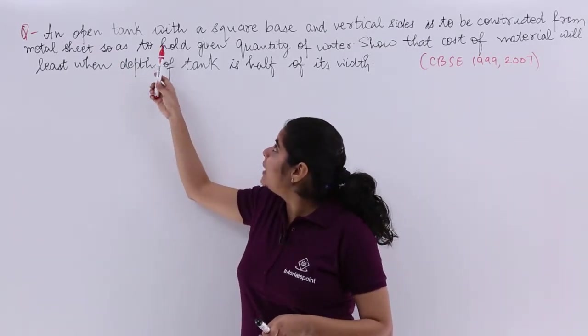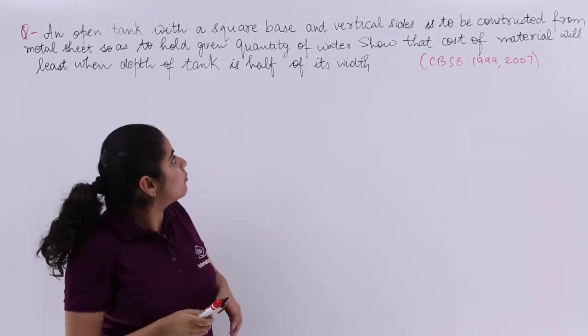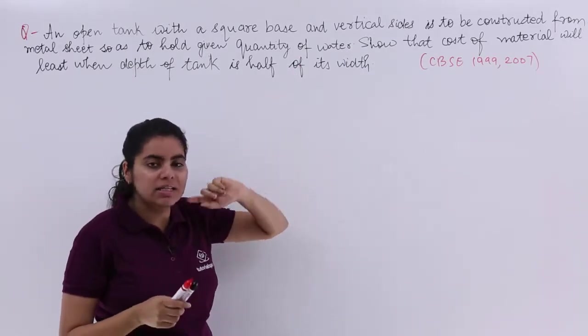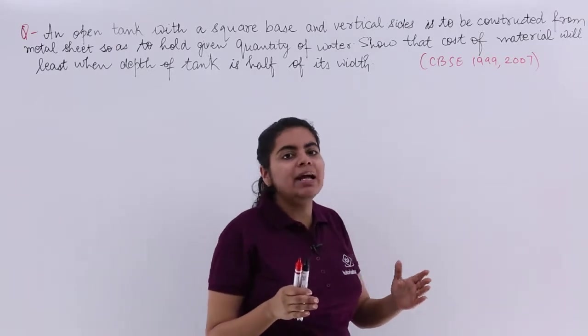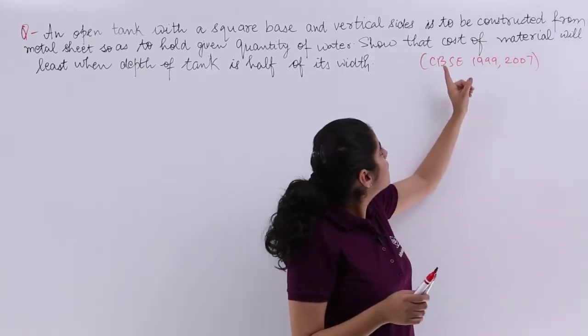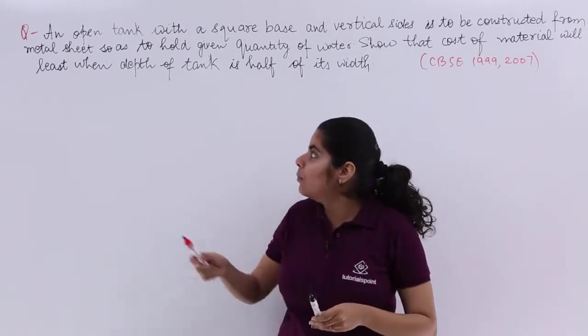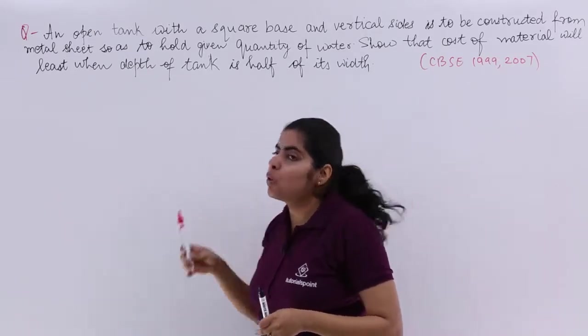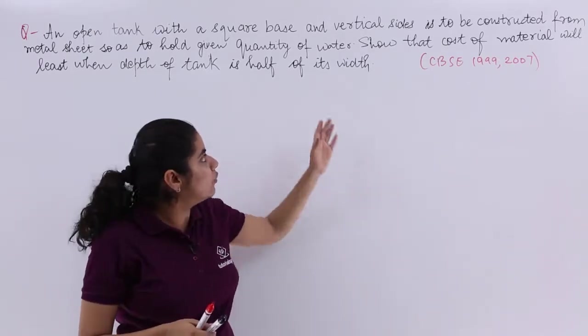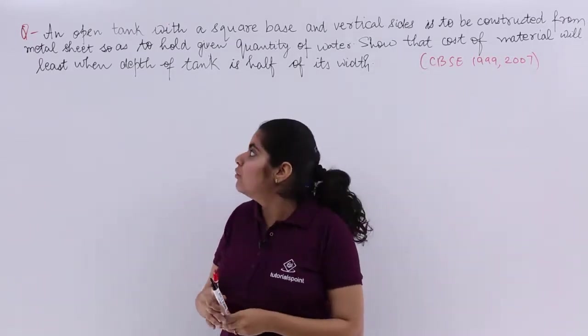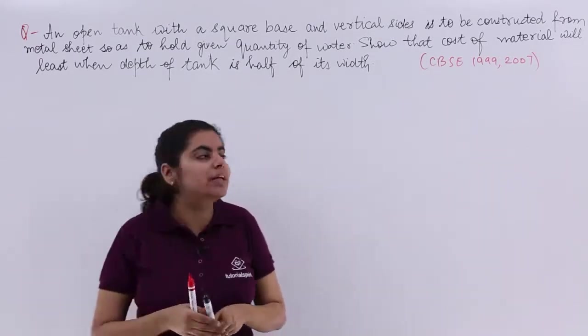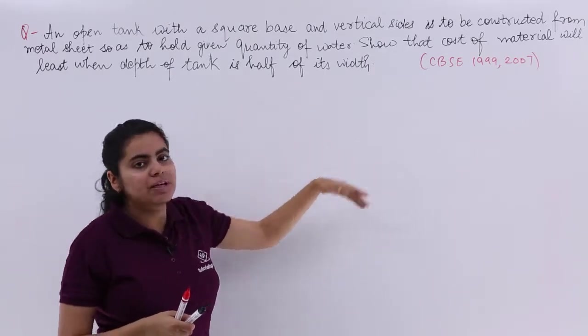The question is: an open tank with a square base and vertical sides is to be constructed from a metal sheet so as to hold a given quantity of water. Show that the cost of material will be least when the depth of the tank is half of its width. So there's an open tank, the base is square, vertical sides are there, open tank means the top is not there, right?